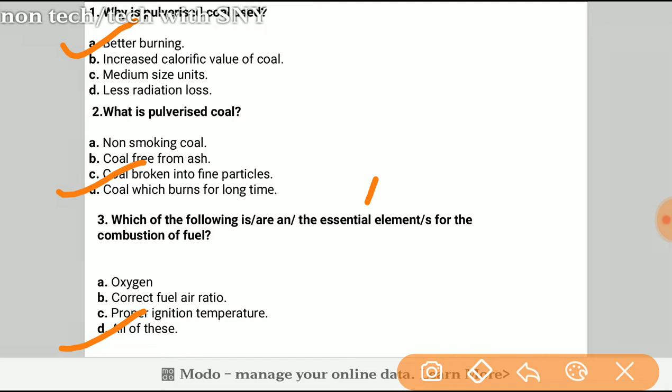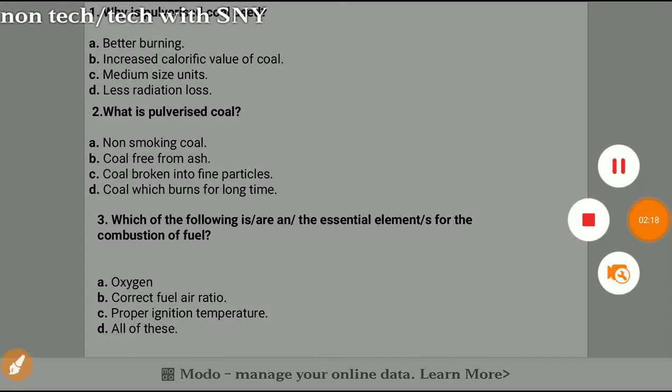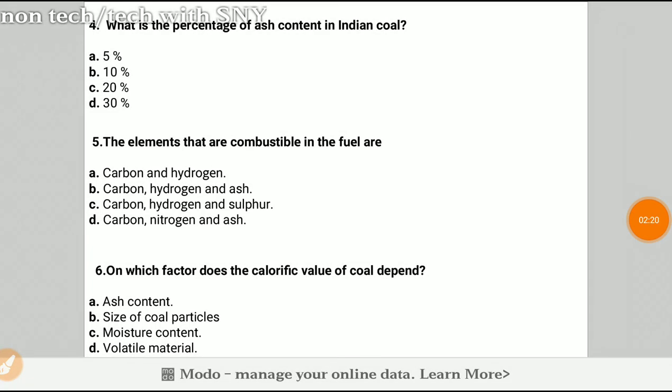The next question is, question number four: What is the percentage of ash contained in Indian coal? The answer will be C, 20%. Ash contains rock material and waste material, so it has 20% in Indian coal.